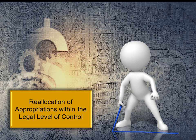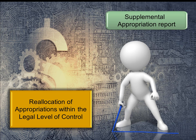Keep a separate file for reallocations within the fiscal officer's legal level of control. These do not require board-adopted legislation, but the auditor needs to verify you haven't reallocated outside your authorized level. Print a supplemental appropriation report showing the decreased and increased appropriation accounts, which verify you haven't crossed your limit, making it quick and easy for the auditor to confirm the legal level of control was followed.